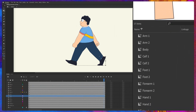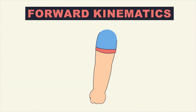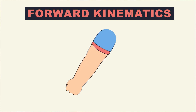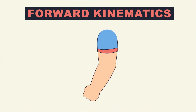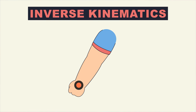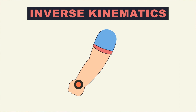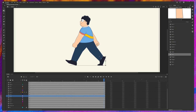Now that we've converted all layers into symbols, let's learn FK rigging in Adobe Animate. In forward kinematics, if we move the arm, the forearm and hand move along with it; if we move the forearm, the hand moves along with it. This provides a natural arc to the movement, which is an important animation principle. This differs from inverse kinematics or IK — used in After Effects — where the hierarchy is reversed: moving the hand causes the arm and forearm to move along with it.